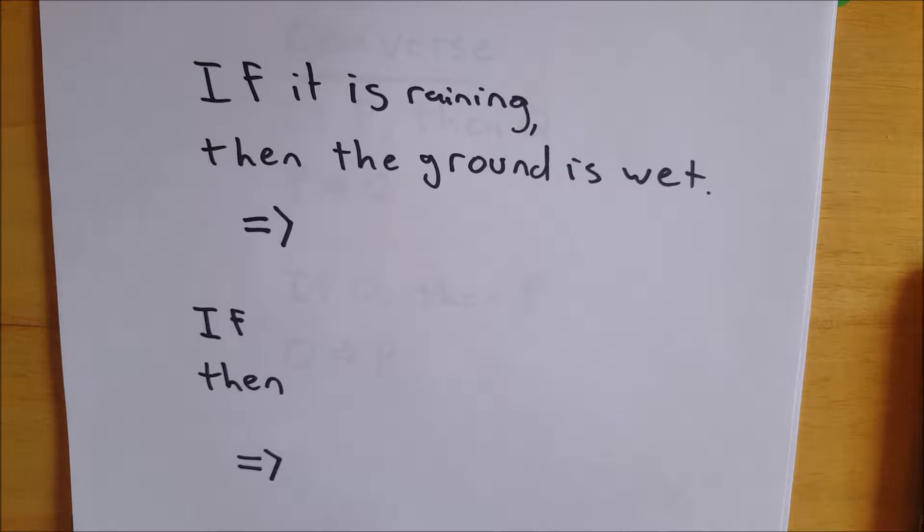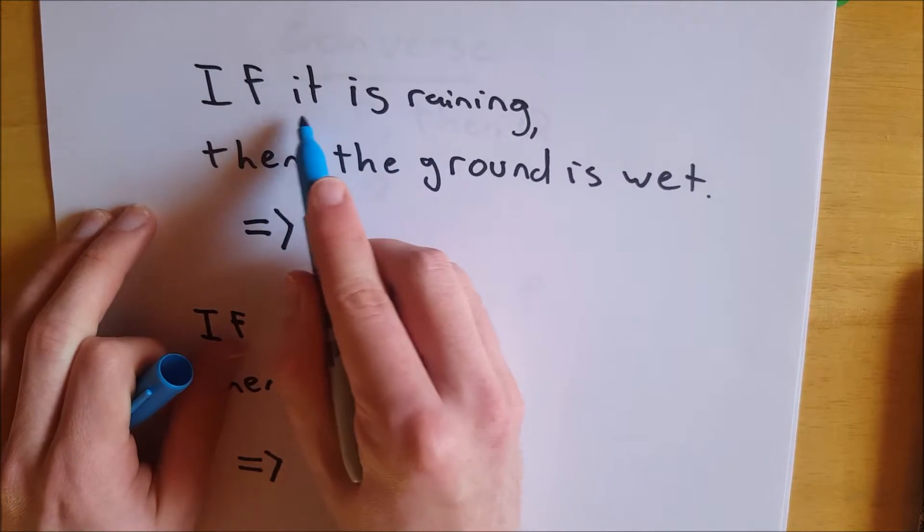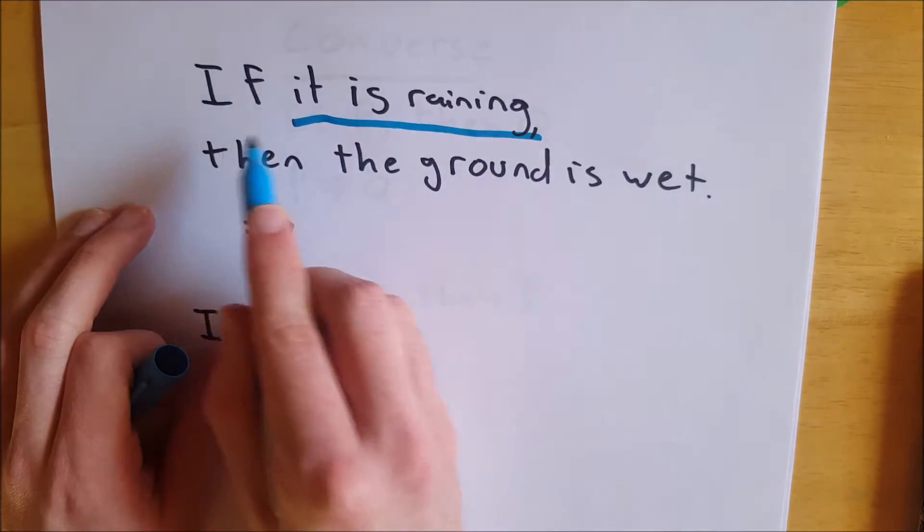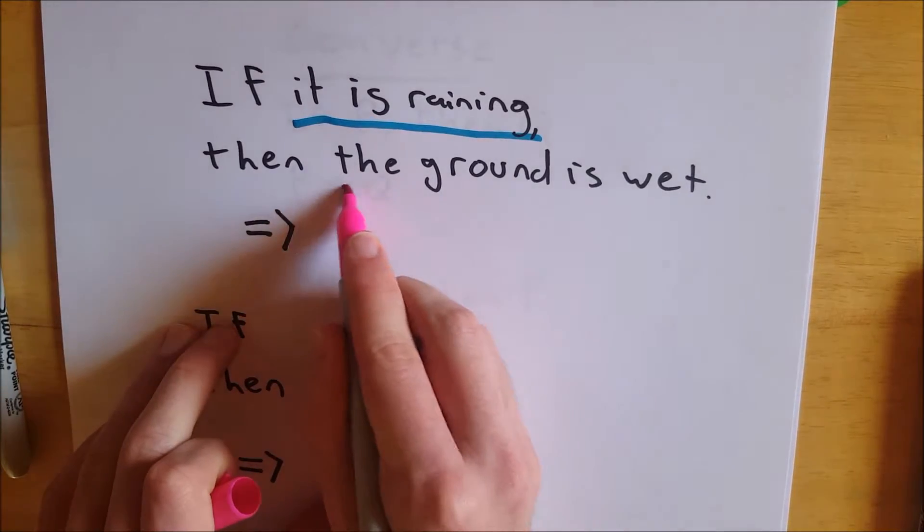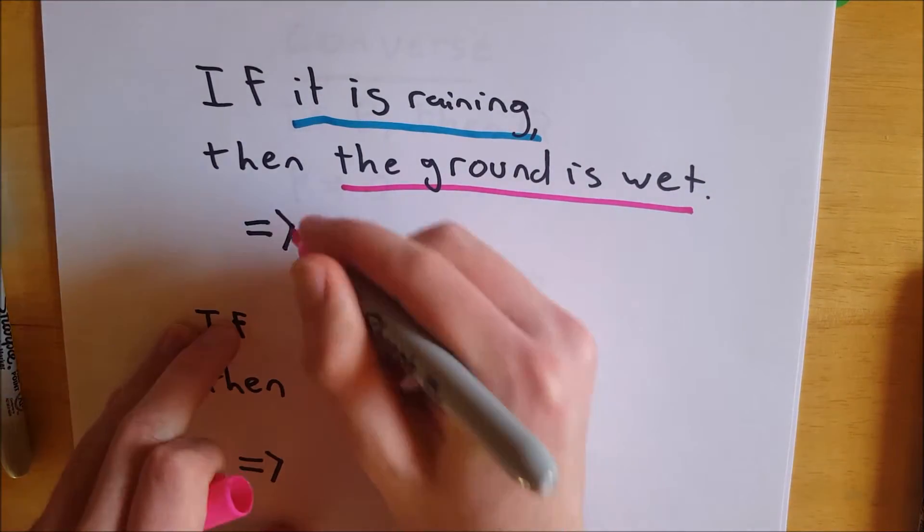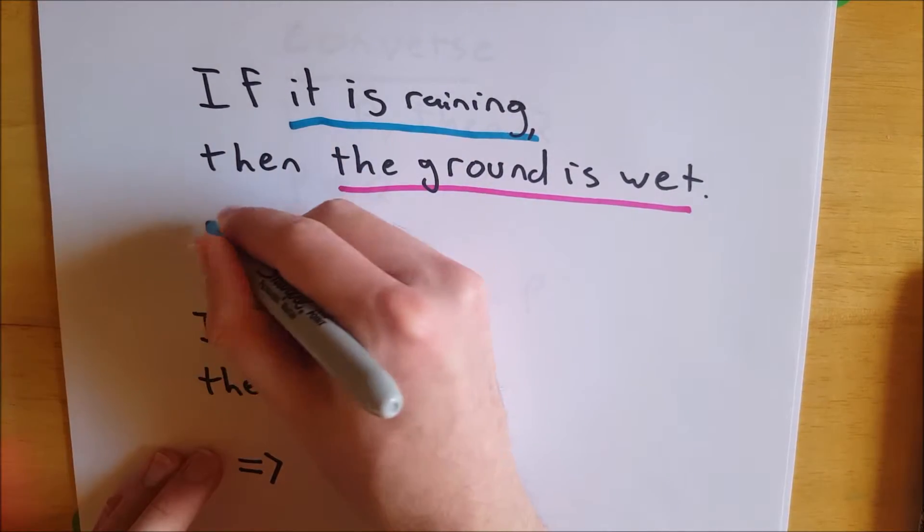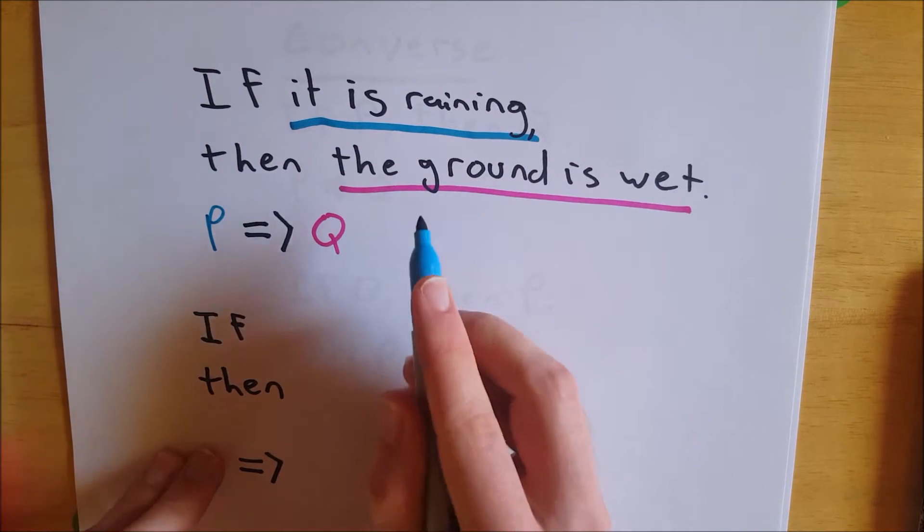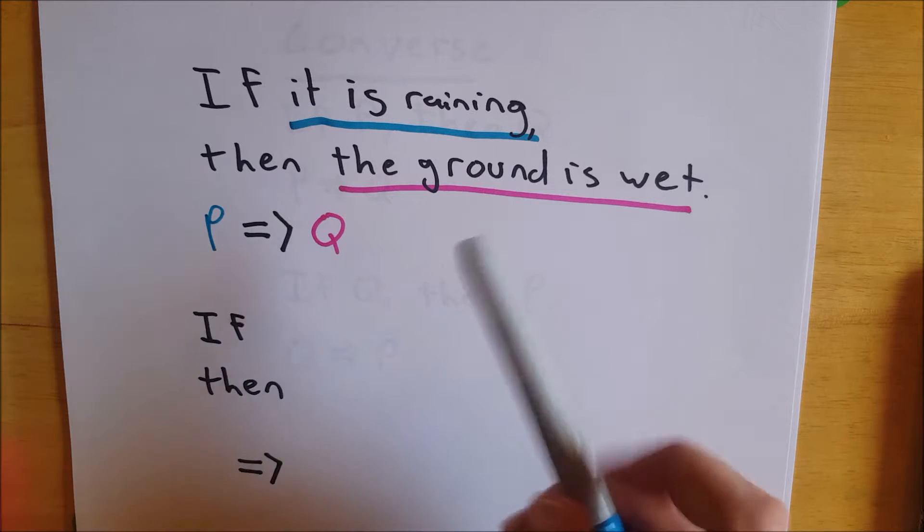First off, we want to identify our P and our Q in the statement. So P is it is raining, if P, then Q. So the ground is wet is the Q part of the statement. The ground is wet. So that's P, it is raining, implies Q, the ground is wet. So now we want to find the converse of this statement.